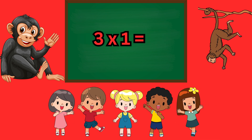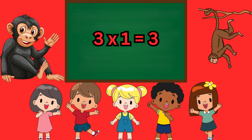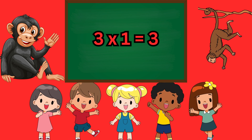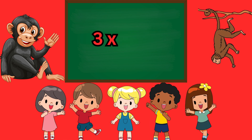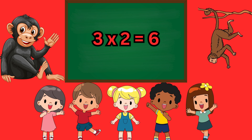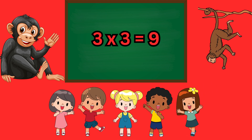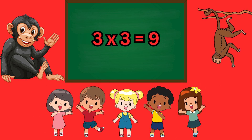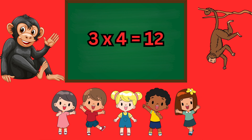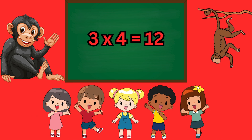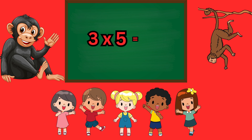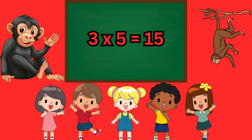Table of Three. Three one's a three, three two's a six, three three's a nine, three four's a twelve, three five's a fifteen.